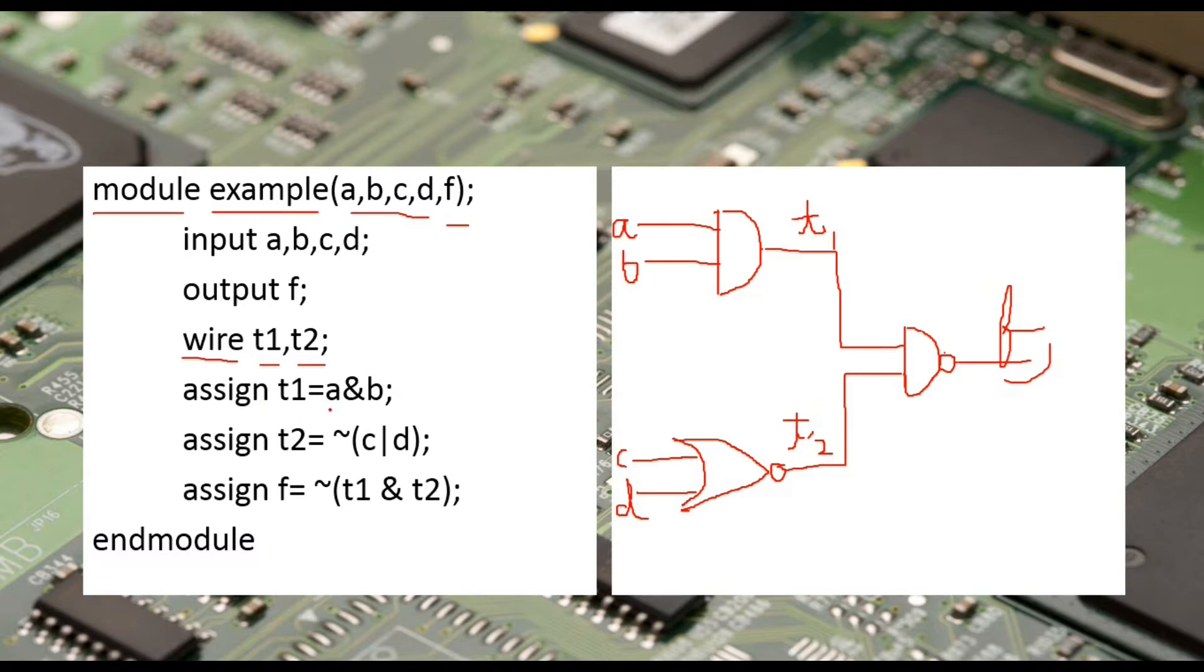Now whatever answer we will get from a and b, that value will be assigned to t1. Whatever value we will get from NOT of c OR d, which means this gate - firstly we did c OR d and then a NOT - that value will be assigned to t2.